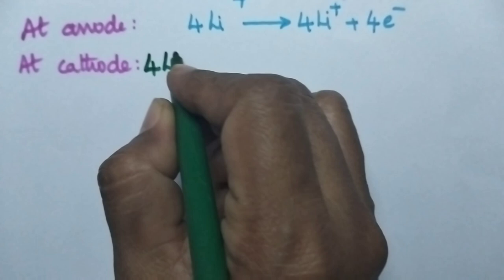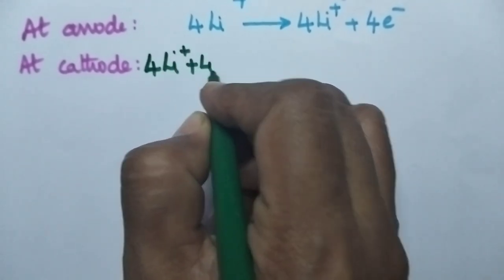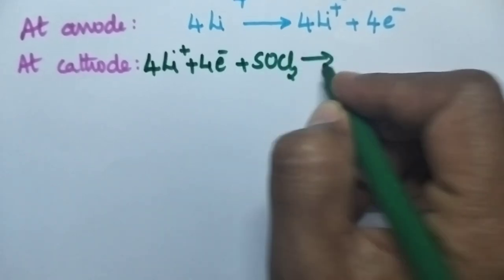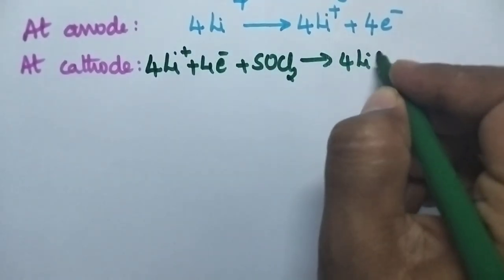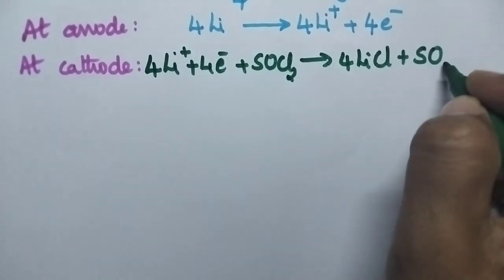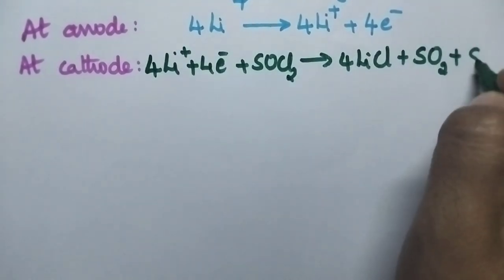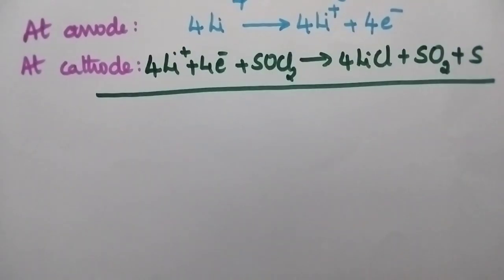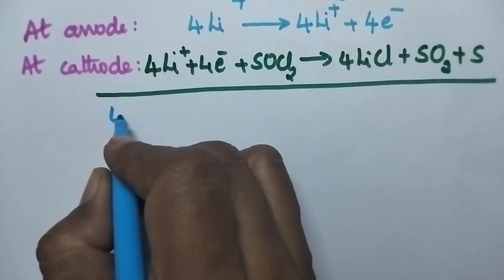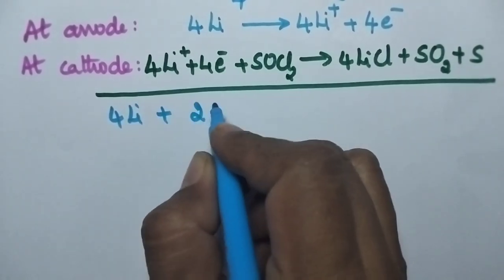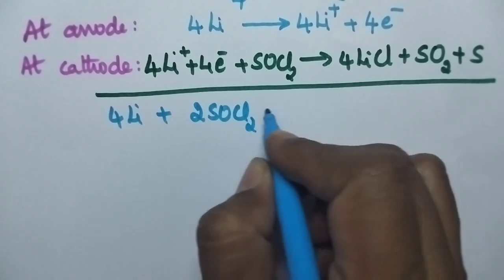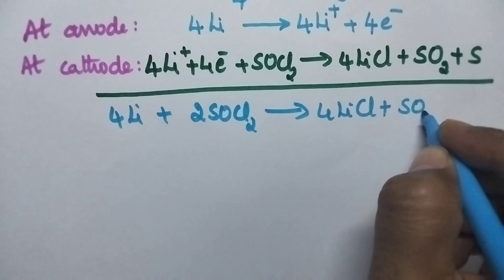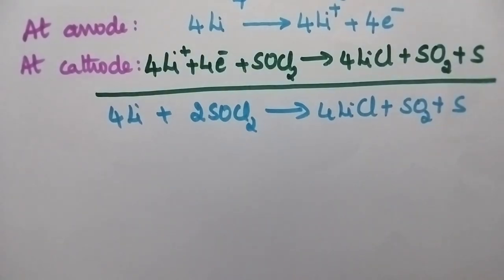At the cathode, the lithium ions are absorbed by thionyl chloride, resulting in the formation of lithium chloride, sulfur dioxide, and sulfur. Hence, the net reaction is lithium reacting with thionyl chloride to form lithium chloride, sulfur dioxide, and sulfur.